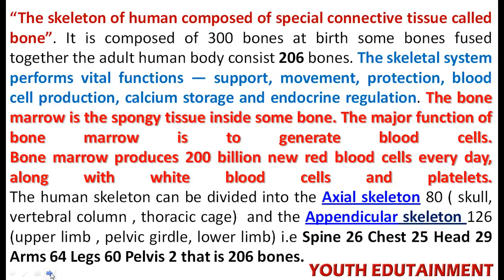The skeletal system performs vital functions such as support, movement, blood cell production, calcium storage, and endocrine regulation. The bone marrow is the spongy tissue inside the bone. The major function of bone marrow is to generate blood cells. Bone marrow produces 200 billion new red cells every day, along with white cells and platelets.